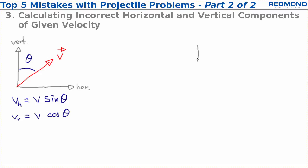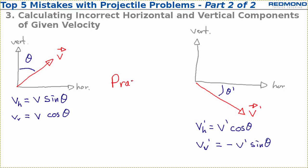For v prime, which I'm drawing on the right of the screen, my horizontal component is v prime cos theta and my vertical component is negative v prime sin theta. For more information about vectors, please visit my channel or my website.